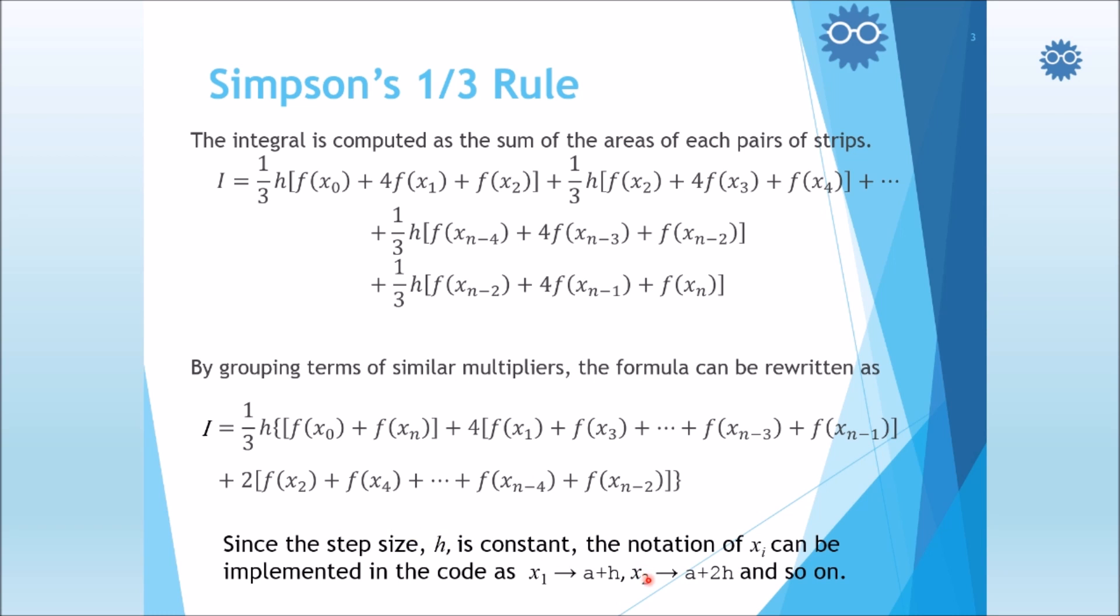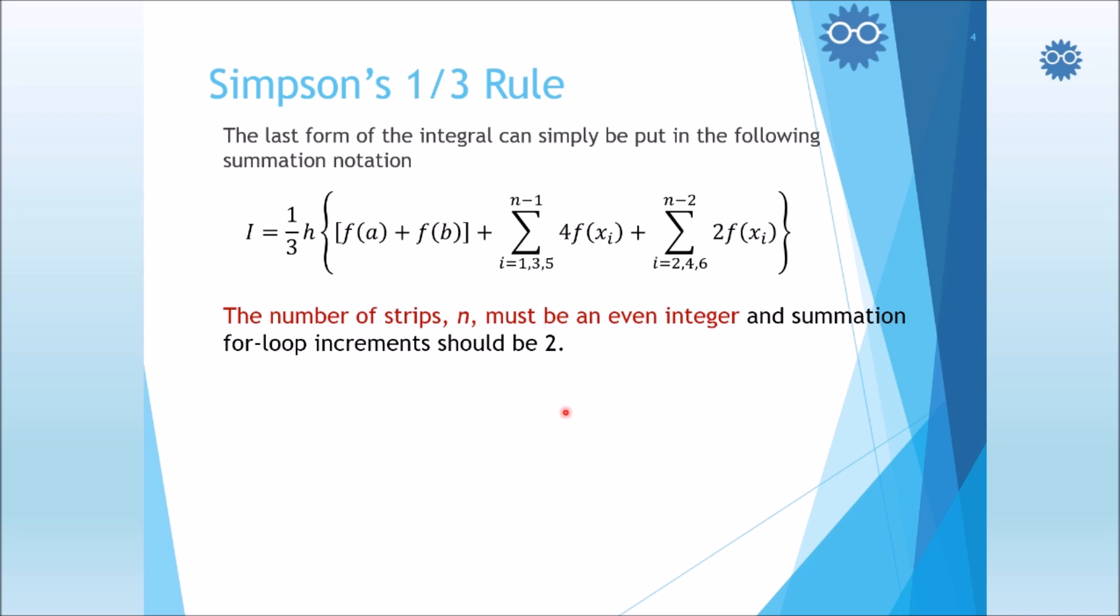Actually, in coding, we don't need to use the subscripted variables or arrays because we can express any integration point in terms of the lower limit of integration plus the corresponding width of the strips up to that point. For example, we have x sub 1 is located at the point a plus h. The point x2 is located at the point a plus 2h. We can notice that there is a direct relation between the subscript and the value multiplied by h. We can create a general formula depending upon the summation of the odd terms and the even terms and the first and last terms of the upper and lower limits of the integration.